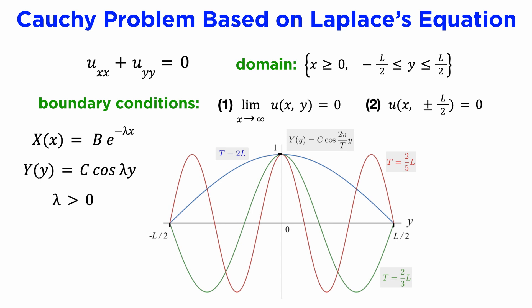To find the allowable periods of our cosine wave, we can see that if the period of our wave is 2L, then this will satisfy the boundary condition of being zero at plus or minus L over 2.